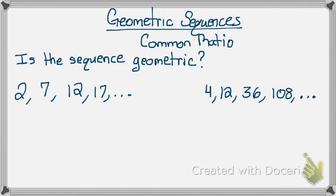So before we even begin, let's look at these two separate examples. Is this first sequence geometric or not? Well, let's see. To get from 2 to 7, I have to add 5. To get from 7 to 12, I add 5. To get from 12 to 17, I add 5. Since I'm adding, it's not geometric, it's arithmetic.